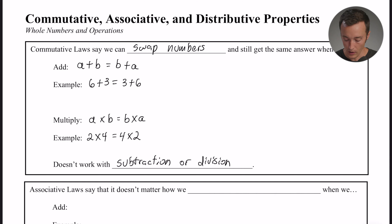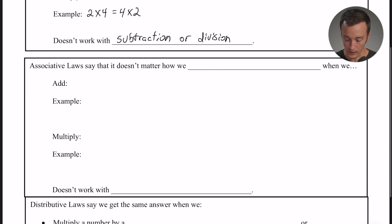That one's one of the easiest ones to remember. Associative laws are a little bit different. The associative property or laws says that it doesn't matter how we group the numbers.